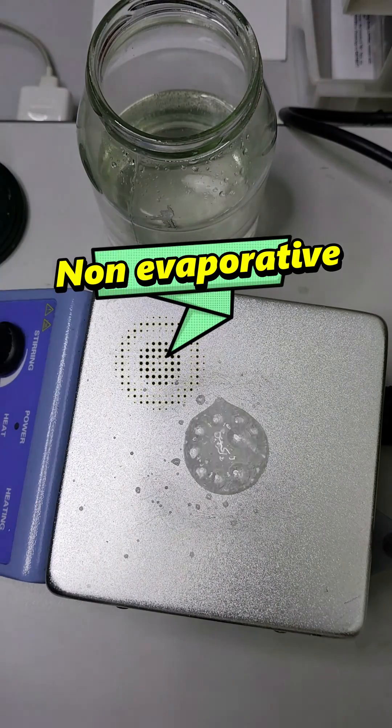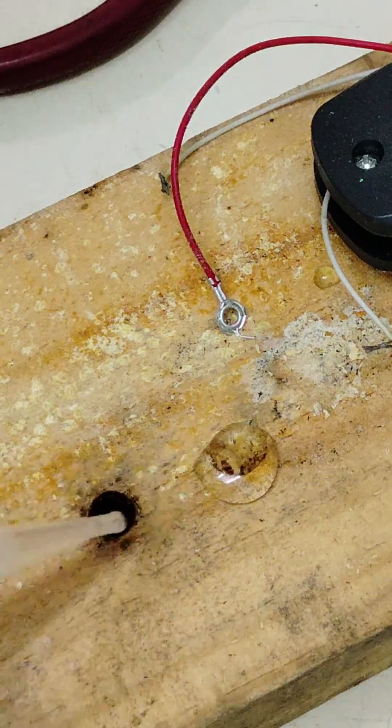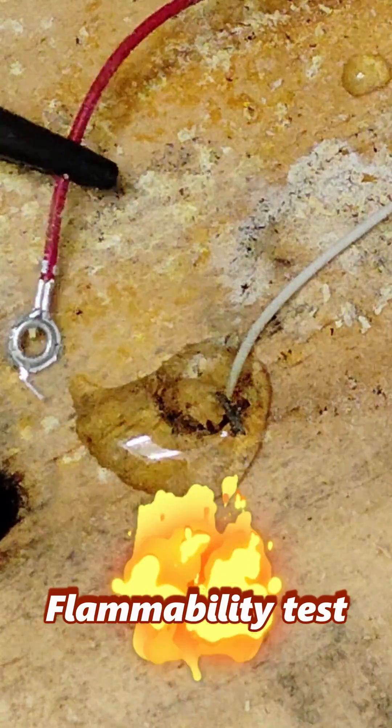By creating your own aluminum ionic liquid, you can tap into its potential in areas like electrochemistry, materials science, and more.